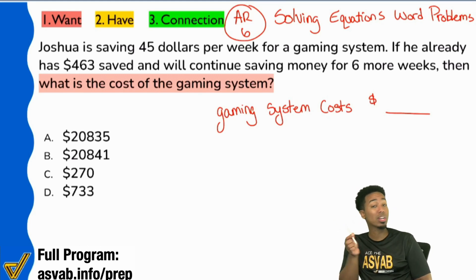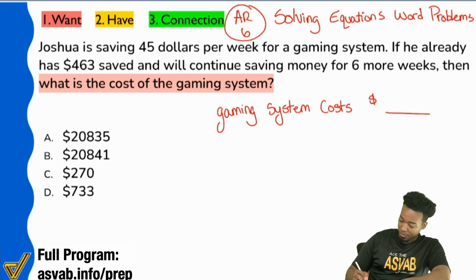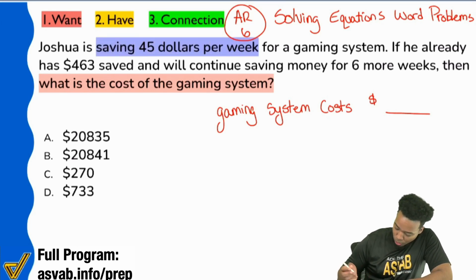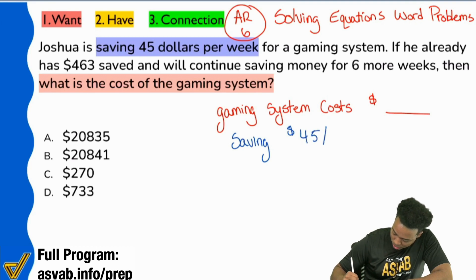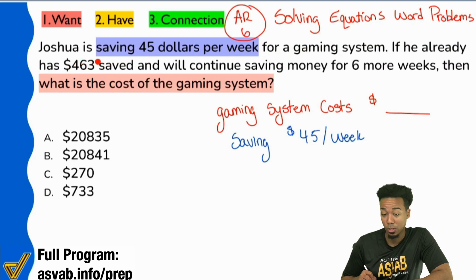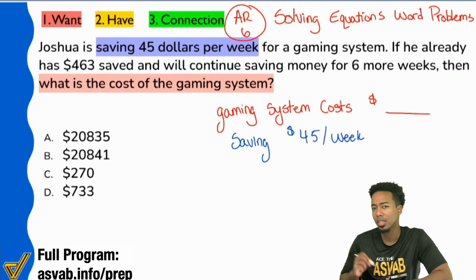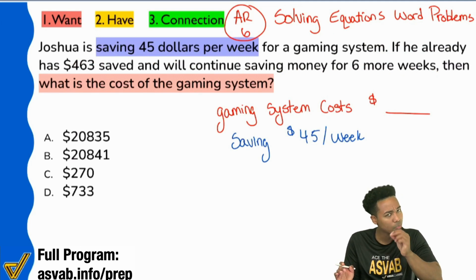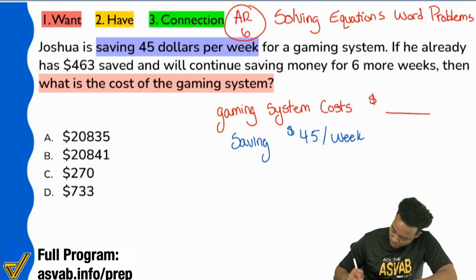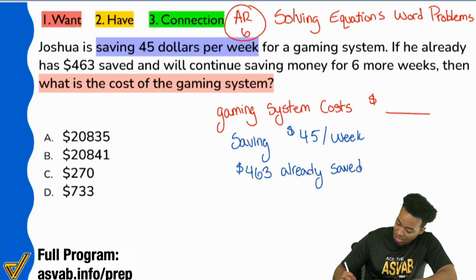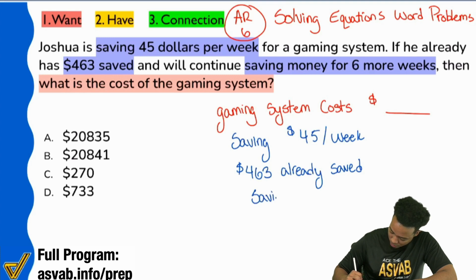So next thing is, we're going to go ahead and write down what we have to work with. So here's what we have. I'm going to highlight everything in blue. So we are saving $45 per week. So let me write that down. Saving 45 per week. Then it says, if he already, excuse me there, if he already has $463 saved and we'll continue saving money for six more weeks, then what's the cost? Okay. I still don't know where I'm going with this, but let's keep writing the information down. We have to stay calm here. So it's going to say right here, $463 already saved. And then we have saving for six more weeks. It's right here. $463 saved. Saving money for six more weeks. Saving for six more weeks. Okay.